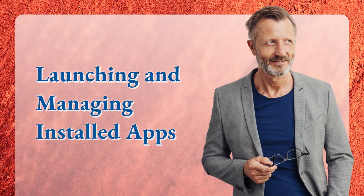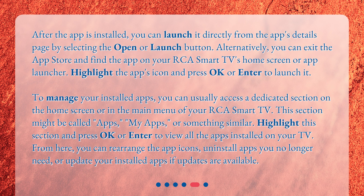Launching and managing installed apps. After the app is installed, you can launch it directly from the app's details page by selecting the Open or Launch button. Alternatively, you can exit the App Store and find the app on your RCA Smart TV's home screen or app launcher. Highlight the app's icon and press OK or Enter to launch it. To manage your installed apps, you can usually access a dedicated section on the home screen or in the main menu of your RCA Smart TV. This section might be called Apps, My Apps, or something similar. From here, you can rearrange the app icons, uninstall apps you no longer need, or update your installed apps if updates are available.